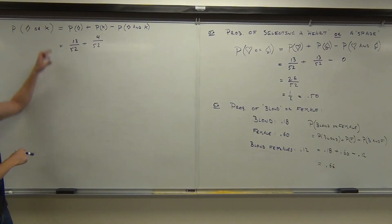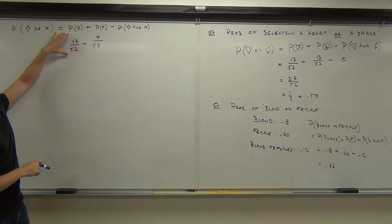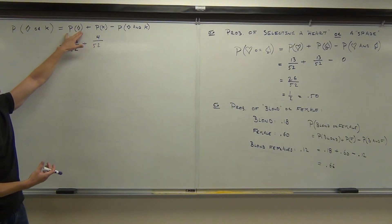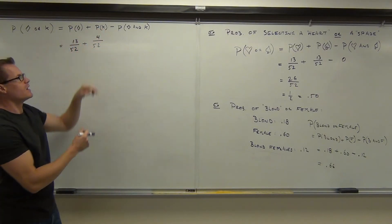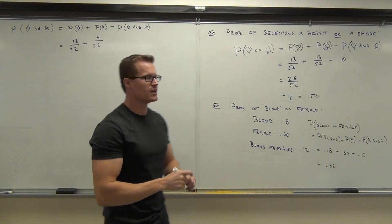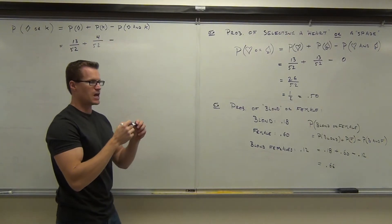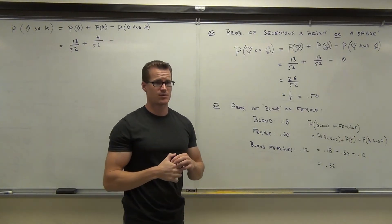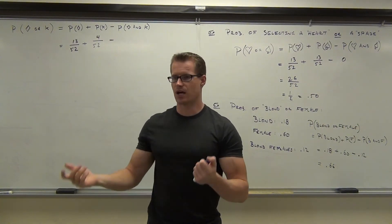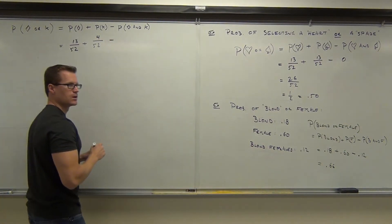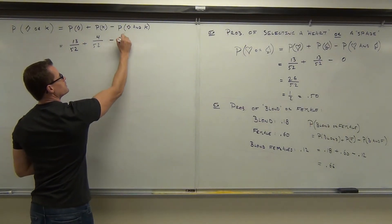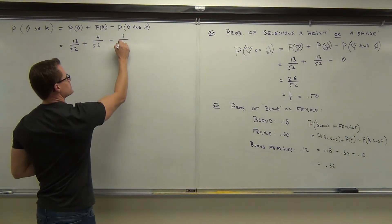We should have a common denominator already. Thirteen over fifty-two because we have thirteen diamonds out of fifty-two cards; four out of fifty-two because we have four kings. We look at these independently — just the probability of selecting a diamond, just the probability of selecting a king. And then we think: can these things happen at the same time? We need to find the probability of selecting a diamond and a king at the same time. That can happen. Because you're pulling out one card, how many choices do you have? One — there's one king of diamonds. There's only one of them out of fifty-two cards.